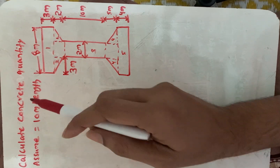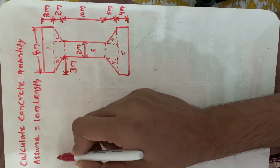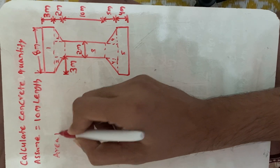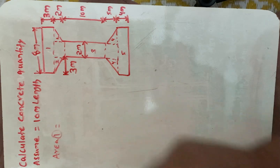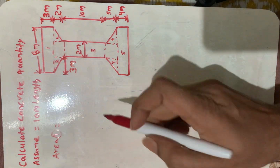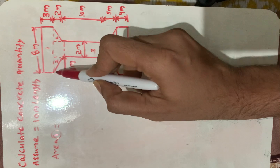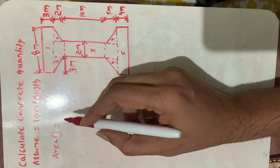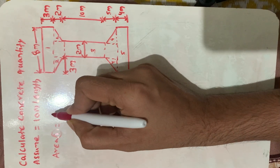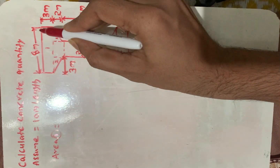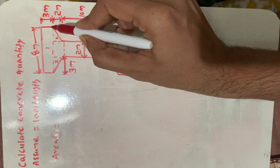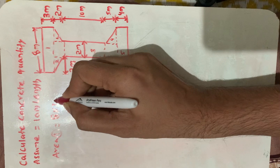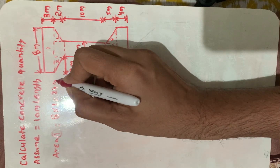First we have to calculate the area of each section. Area 1: this section looks like a rectangle. We know the formula for a rectangle is L × B. Here L is 8 meters and B is 3 meters. So 8 × 3 = 24 square meters.